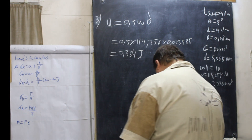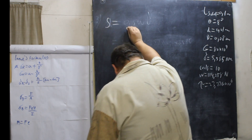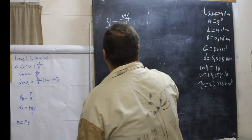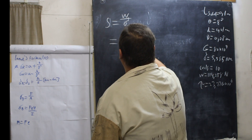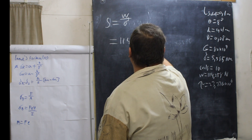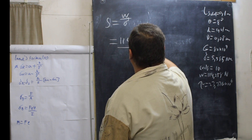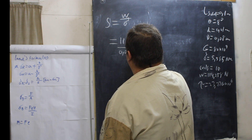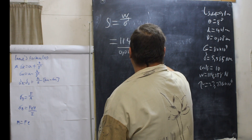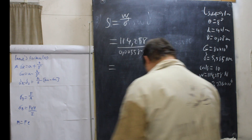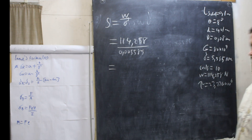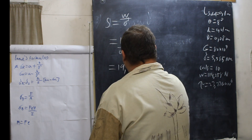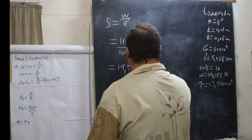Number four — the stiffness. S = W / δ = 114.258 / 0.005585, giving a stiffness of 19,531 N/m.